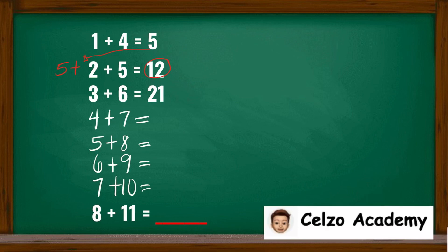For the third line, to get the answer 21, it's 3 plus 6 is 9, and then adding the previous answer, 12. So 12 plus 3 is 15, 15 plus 6 is 21.